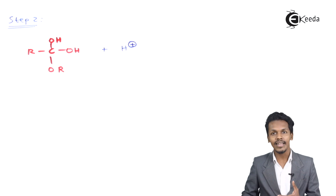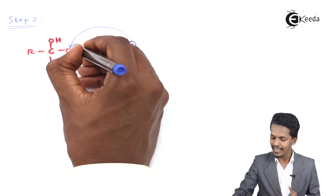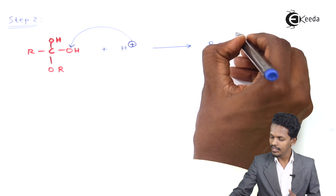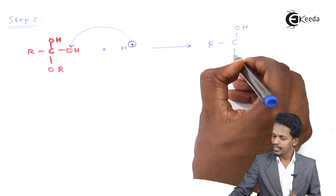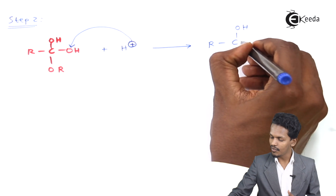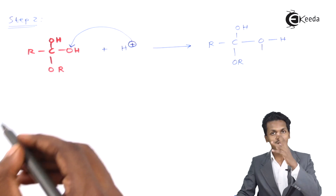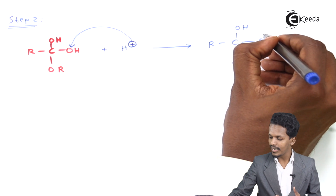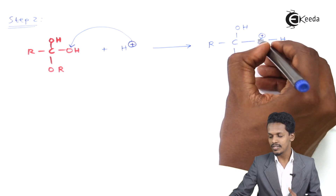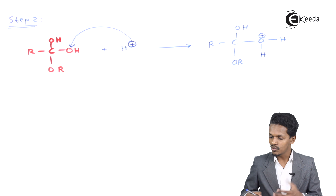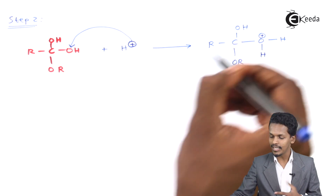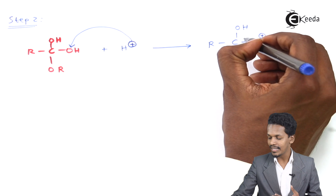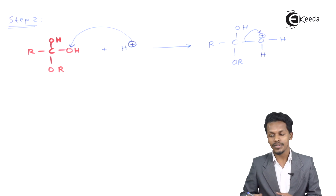After H⁺ attack, the product is RC(OH)(OR')(OH₂⁺), where the oxygen now carries a positive charge due to three valencies. To neutralize this, the electrons shift, and a water molecule is lost.